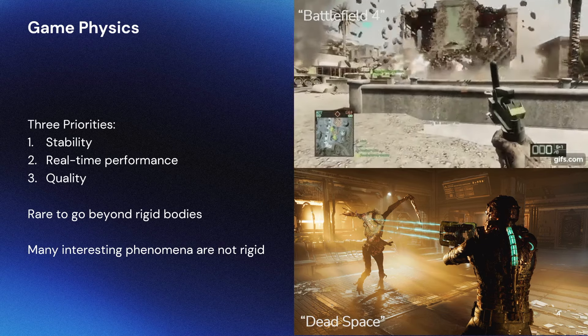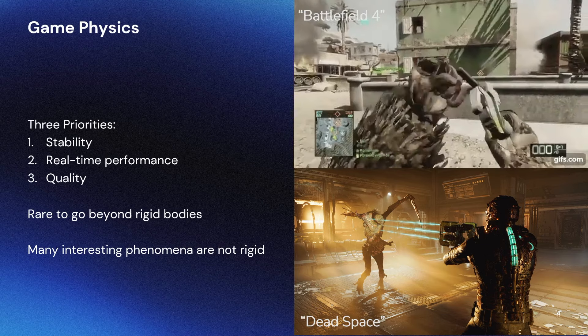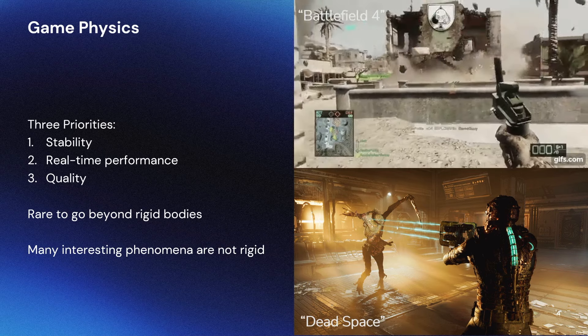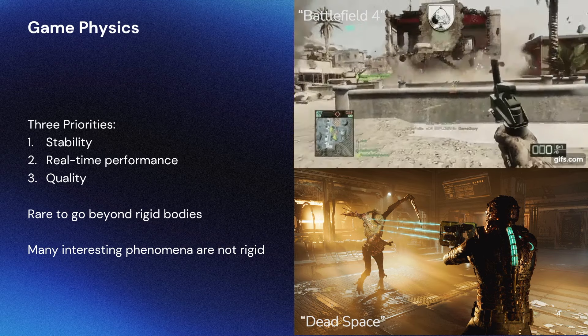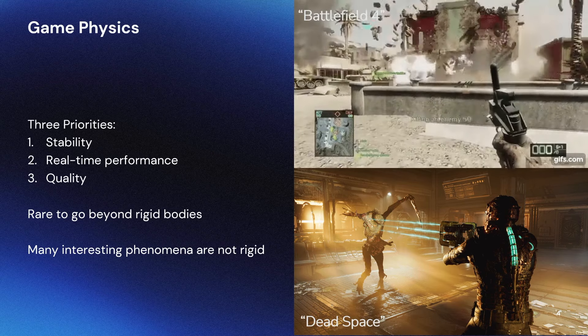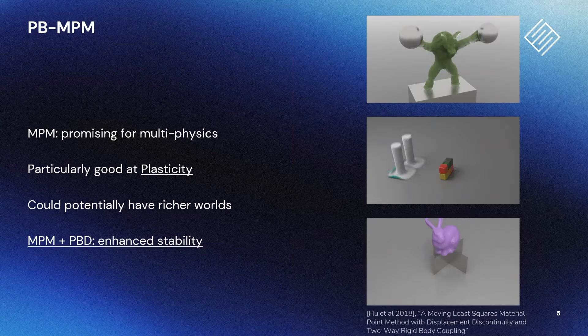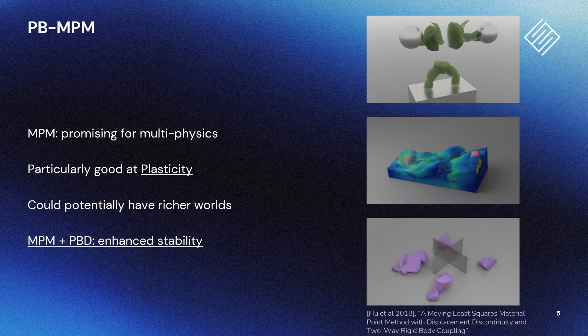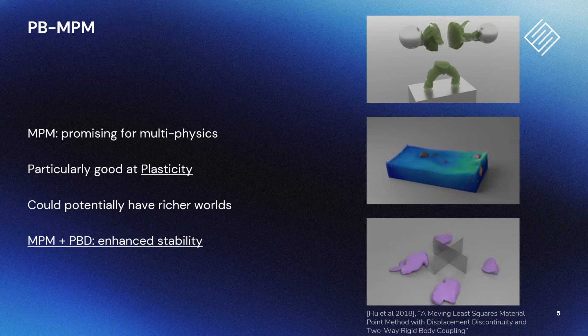Typically, rigid body simulation is the only kind of physics that is allowed to affect gameplay. This is not a great representation of the real world, because many common phenomena are not well represented as rigid bodies. So, one of the things I'm interested in as a games physics researcher is finding more general multi-physics simulation methods that are compatible with these restrictions, so that we can potentially have richer and more dynamic game worlds in the future.